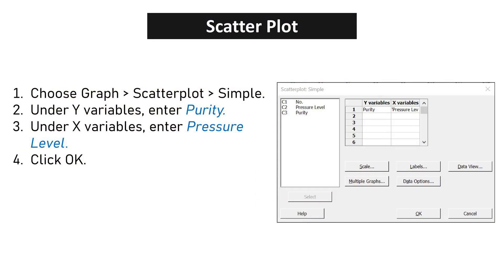Choose Graph, Scatterplot, Simple. Under Y variables, enter Purity. Under X variables, enter Pressure Level. Click OK.